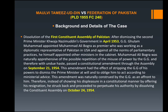The details of the case: after dismissing the second Prime Minister Khwaja Nazimuddin's government in April 1953, the Governor General Ghulam Muhammad appointed Muhammad Ali Bogra as the premier, who was working as a diplomatic representative of Pakistan in the USA. Against all the norms of parliamentary practices, he himself appointed other ministers in the cabinet.